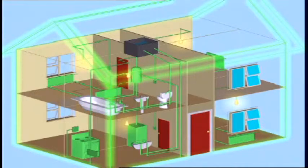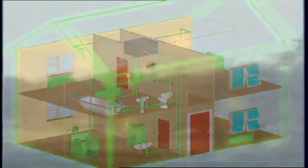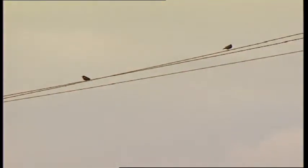With no potential difference, there can be no current flow. That is why you will see birds safely perched on live electricity wires, as there is no potential difference across their feet.